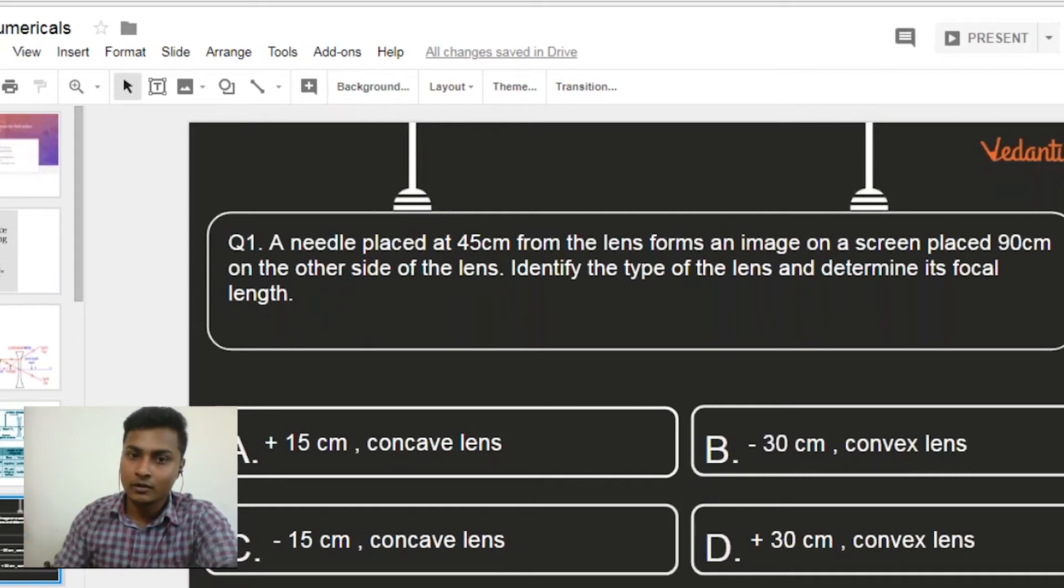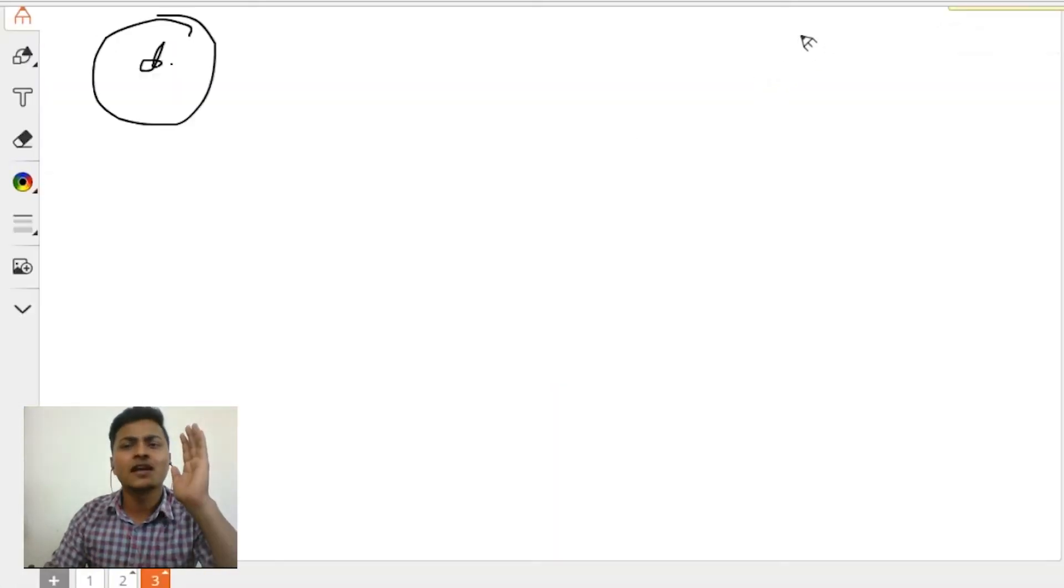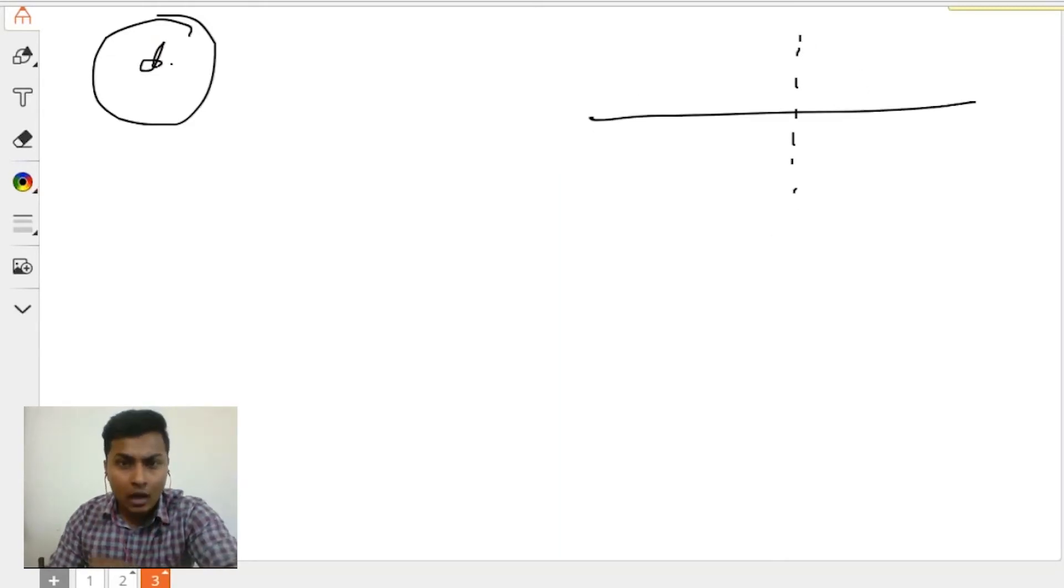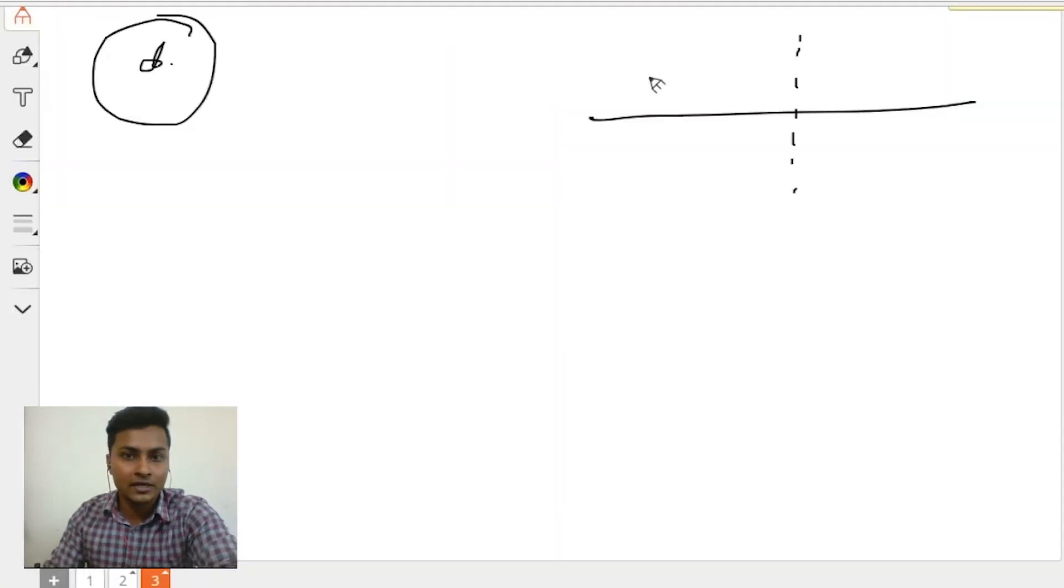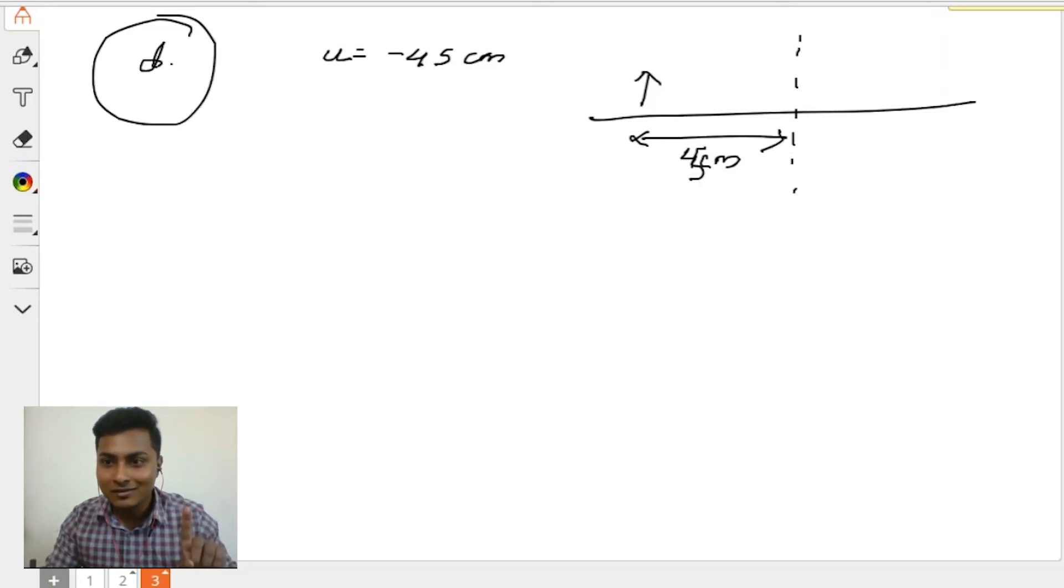So first thing which you need to do is to make a rough diagram. Make anything here in the center and draw a diagram because you don't know which lens is it, correct. Now, a needle placed at 45 centimeter from the lens. You know object distance is always on the left hand side. So this is your 45 centimeter, so you have taken minus 45 centimeter, right? Yes sir.